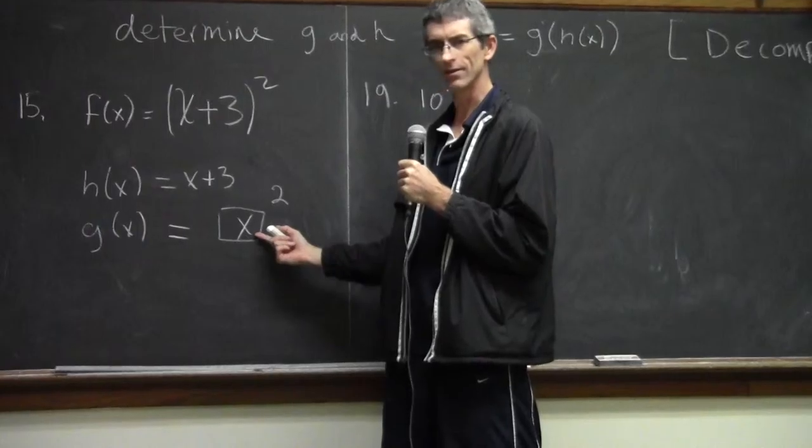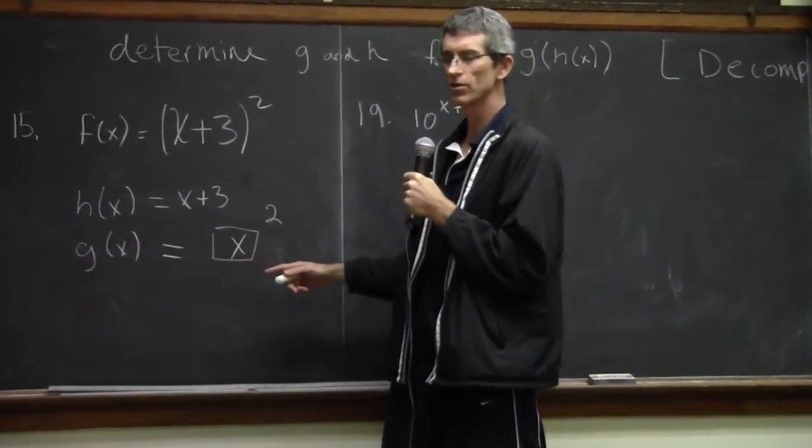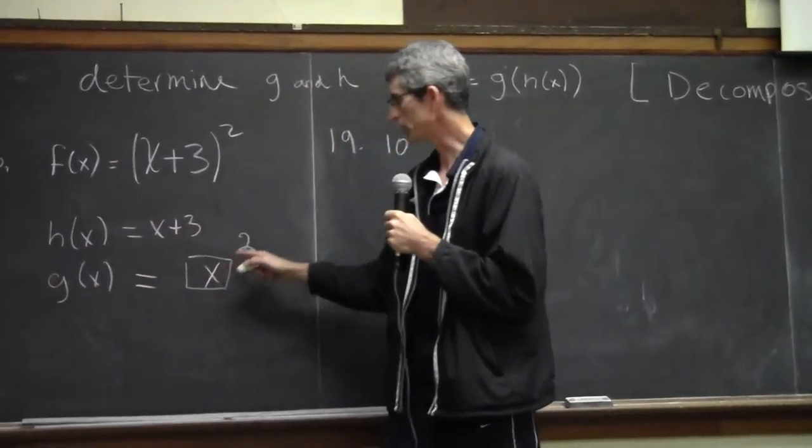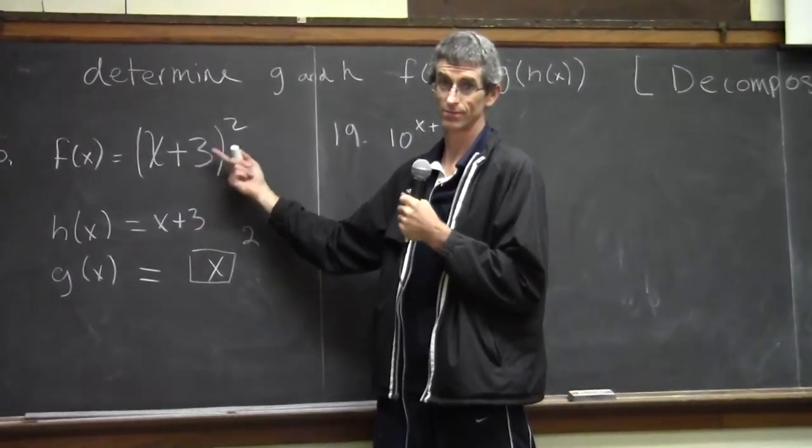But remember, this x and this x aren't the same thing. This is just a container. We could also call it y. It really doesn't matter, but we're calling it x. This is the way we do it. So h(x) is x + 3, g(x) is x². And if you compose those two together, you'd come back to this. Cool? Let's do another one.